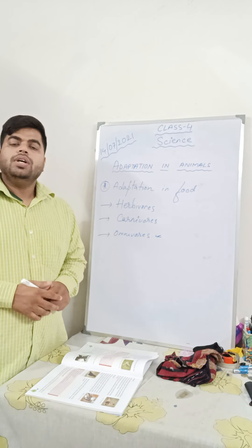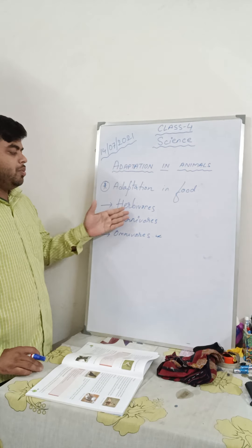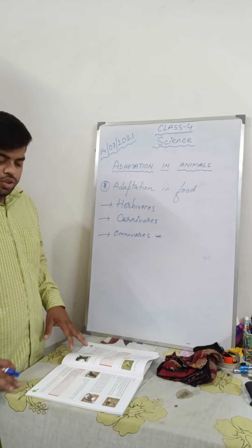I hope all of you have understood the adaptation of food that can be seen in animals. As I have explained, there are three types of animals: herbivorous, carnivorous, and omnivorous. Please put a tick mark till here. In the next class, we will read care and concern for animals. So for today, up to this much. Thank you class.